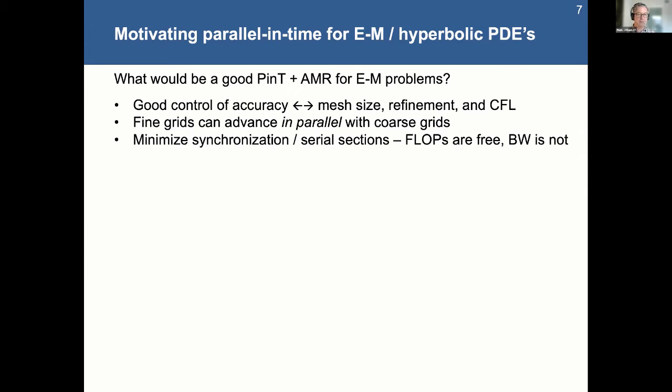So I want to control accuracy and I want to be able to move fine grids in parallel with coarse grids. I'd like to minimize synchronization in serial sections because, in general, the bandwidth on modern GPUs and other architectures is what's limiting the speed of things. So you want to be able to just use as many flops as you can for accuracy and not move any additional data.